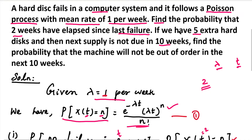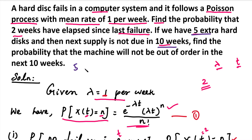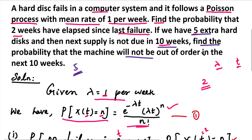For the second part, if we have 5 extra hard disks and the next supply is not due for 10 weeks, we need to find the probability that the machine will not be out of order in the next 10 weeks. This means we need at most 5 hard disk failures in 10 weeks.